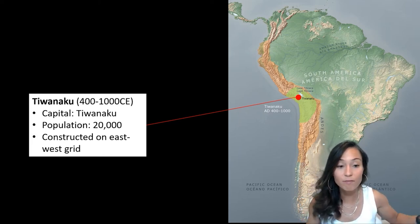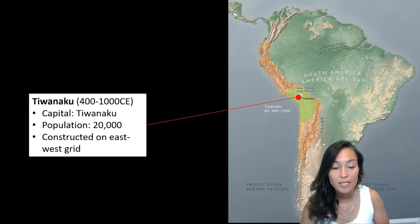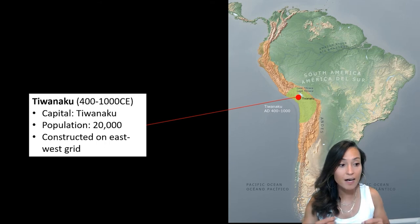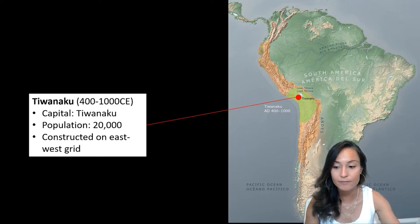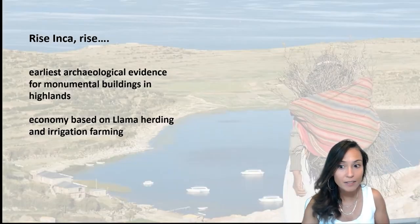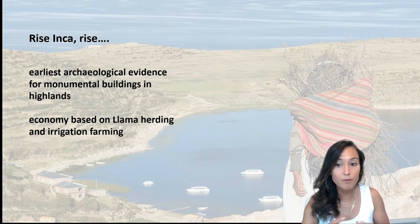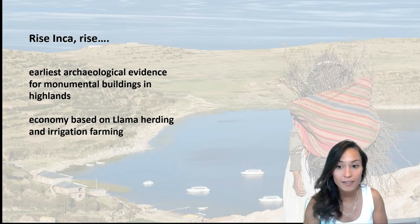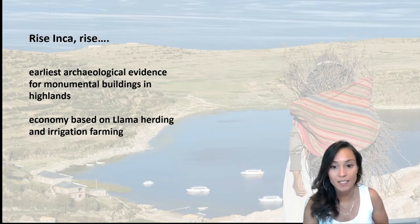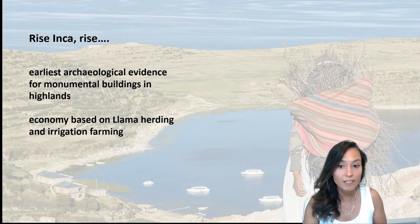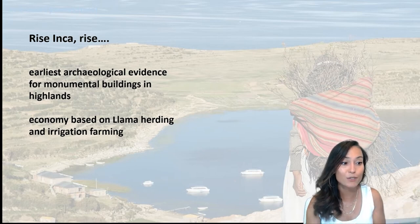We also see the construction of large residential buildings arranged into compounds using a mud-brick technique, and a high dependence on agricultural production using canal and aqueduct systems to support this large population aggregation at Tiwanaku. Tiwanakuan civilization dominated the area from the Peruvian coast up into northern Bolivia and Chile. It offers us the earliest archaeological evidence for monumental buildings in the highland region of the Andes and was rooted in an economy based on llama herding and irrigation farming. These facets of Tiwanakuan civilization are continued into the Incan civilization.